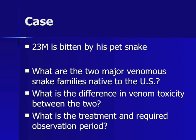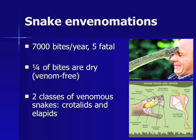Let us now move on to another case. A 23-year-old man is bitten by his pet snake. What are the two major venomous snake families native to the U.S.? What is the difference in venom toxicity between the two? And what is the treatment and required observation period? There are 7,000 reported snake bites in the United States per year, only 5 of which are fatal. 25% of bites by venomous snakes are venom free.